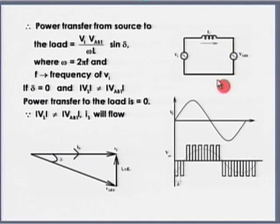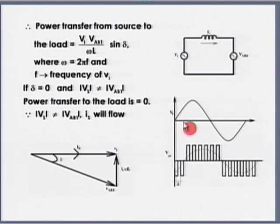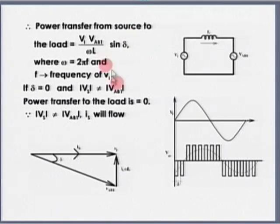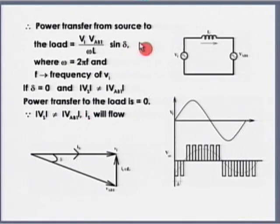To supply only reactive power, the inverter must draw a small amount of active power to account for losses in the inductor and the inverter itself. So in the non-ideal case, δ is not exactly zero — it is a small value determined by the system losses. We will discuss both cases: when there is active power transfer (how to choose δ) and when there is only reactive power (δ approaches zero).